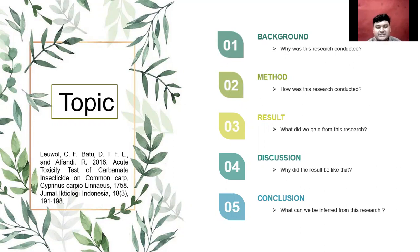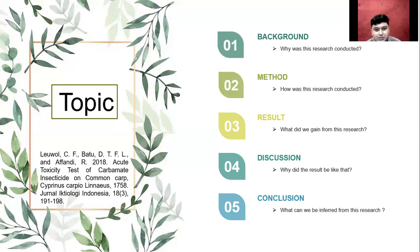Carbamate is a highly toxic pollutant for animals, even though this insecticide is biodegradable in nature and in the food chain. The purpose of this research was to find the LC50-96 of carbamate insecticide Marshall 200 EC on the test organism. The test organism was common carp Cyprinus carpio, with a length of 6 to 8 centimeters and weight of 5.5 to 9 grams. The study used an experimental method divided into two steps: a preliminary test and an acute toxicity LC50-96 test. The results showed that the LC50-96 of carbamate insecticide on Cyprinus carpio was 1.98 mg per liter.